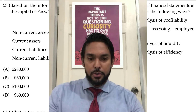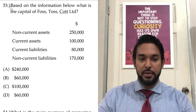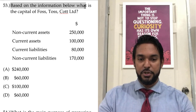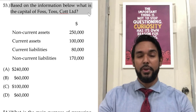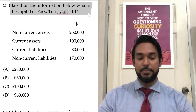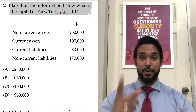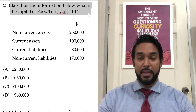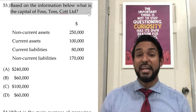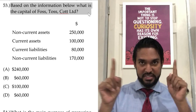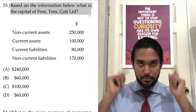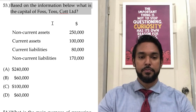Let's take a look at number 53. It says, based on the information below, what is the capital of FOS-TOS-COT Limited? Nudge, nudge for the names — anybody who has the paper ones and has been going through might recognize that name if you piece it together and listen to it.